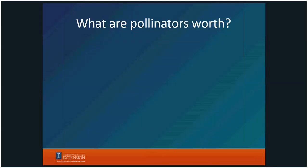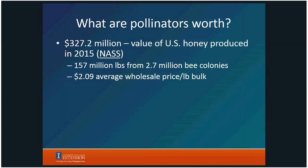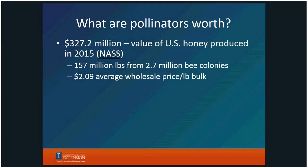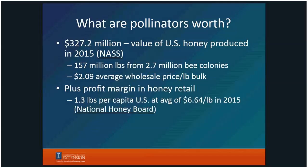In addition to pollination services, there are honeybee products. Honey itself is valued by the National Ag Statistics Service at around $327 million in 2015 — quite a bit less than the $655 million from pollination services, so roughly half. In 2015, U.S. beekeepers' honey-producing colonies produced 157 million pounds from 2.7 million bee colonies, with an average bulk wholesale price of just over $2.09 per pound.